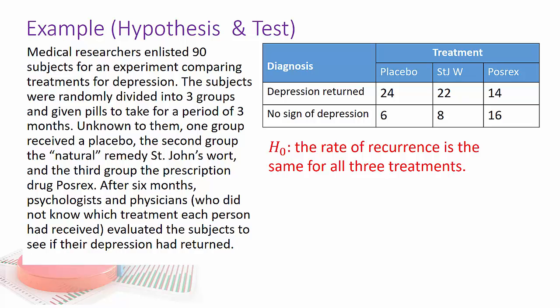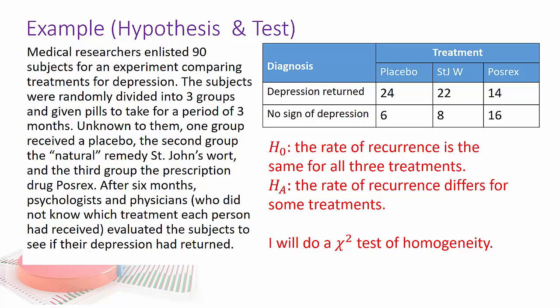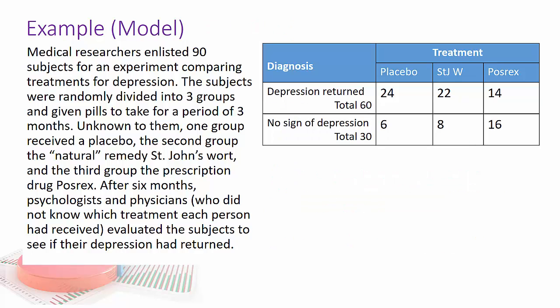So the rate of occurrences, the null is that the rate of recurrence is the same for all three treatments. The alternate is that the rate of recurrence differs for some treatments. It could just be one, could be two. Basically we're going to do a chi-square test of homogeneity. So first thing we're going to do is take a look at the model and make sure that we can do the chi-square test of homogeneity.